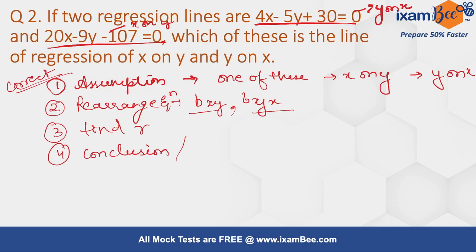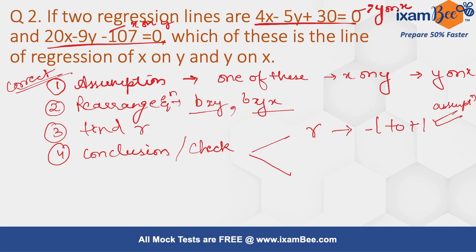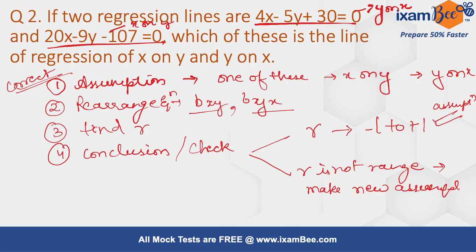To check the answer: if the value for r lies within the range minus one to plus one, then our assumption was correct. If r is not within the range, then we have to make a new assumption. In the new assumption, if we had assumed the first line as y on x and the second as x on y, we now assume the first one as x on y and the second as y on x.